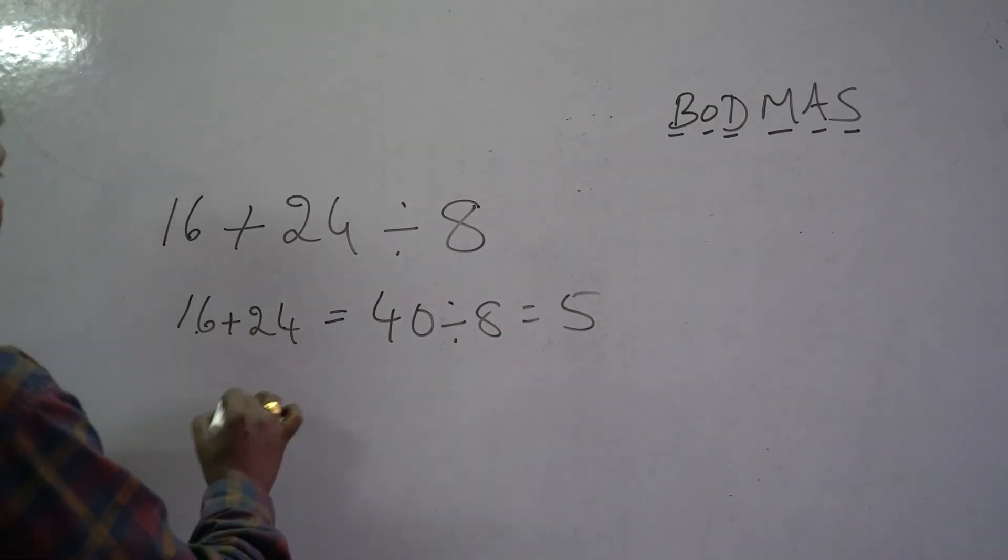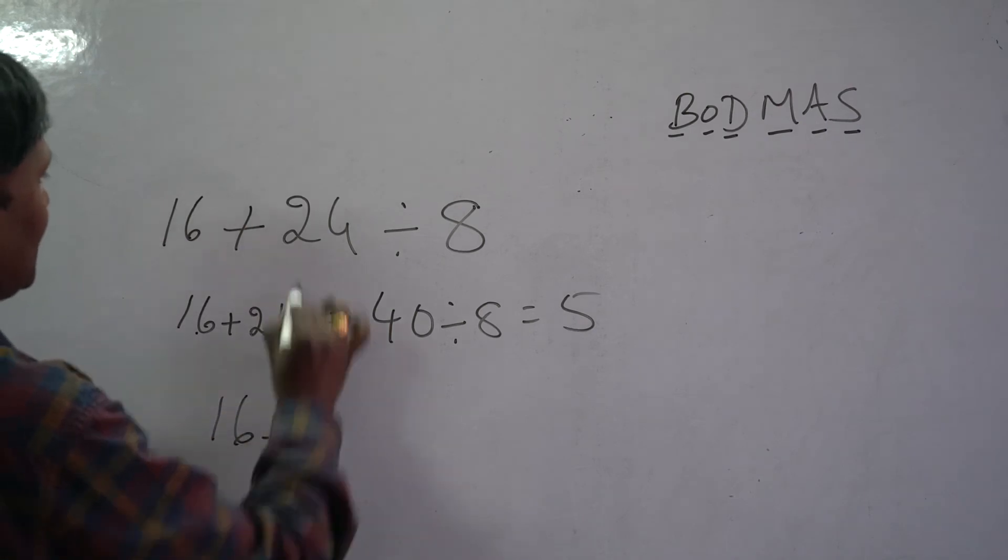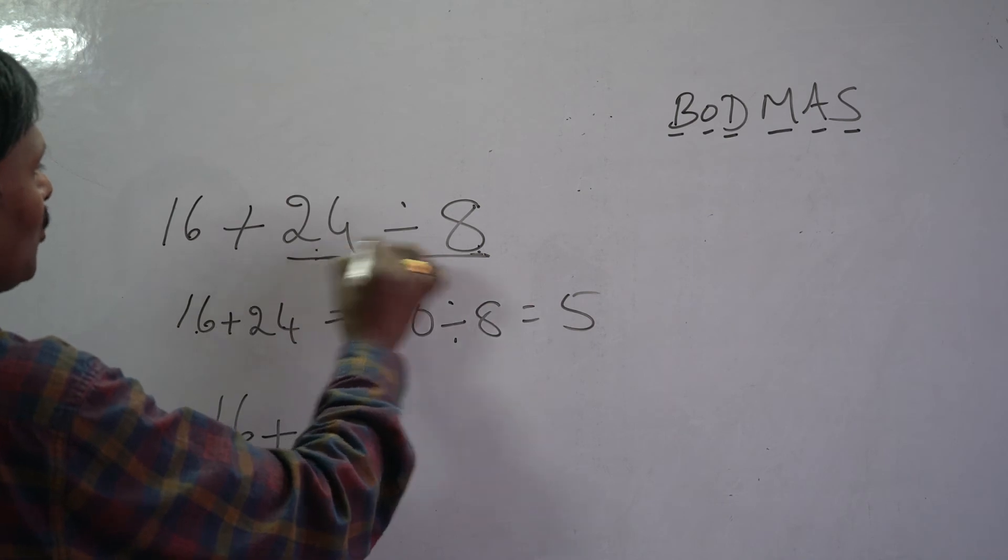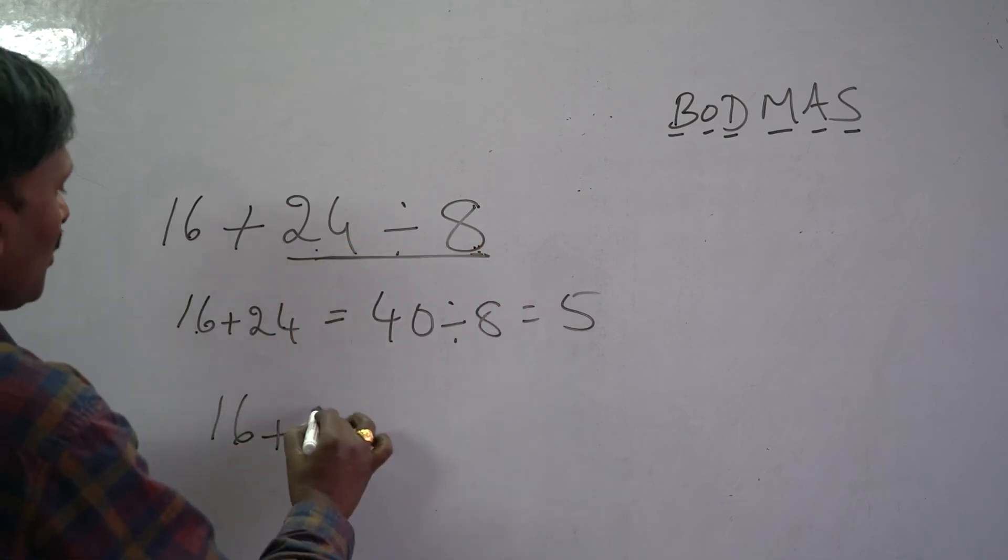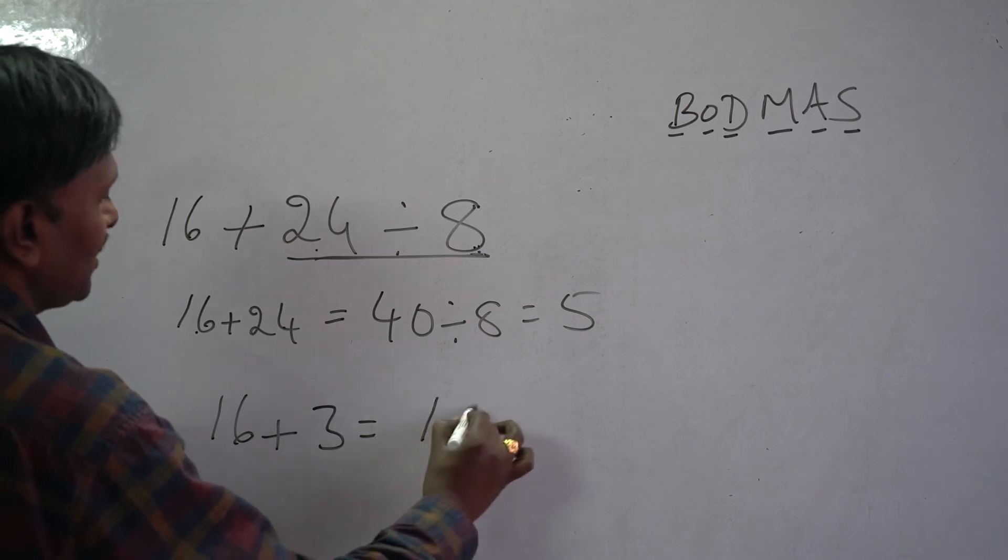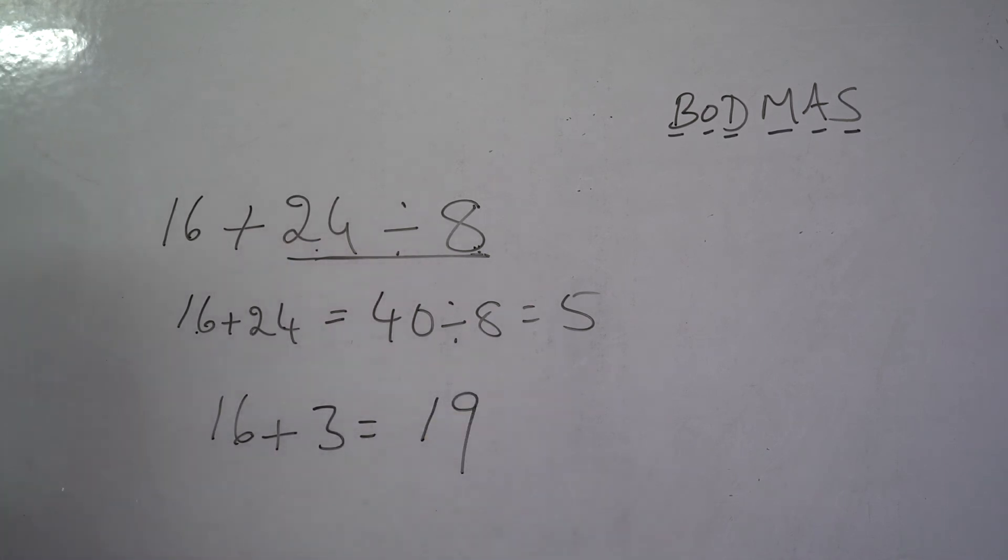But 16 plus, you have to do the first of this one. 24 divided by 8 is how much? 3. So, how much? 16 plus 3. 16 plus 3, how much? 19.